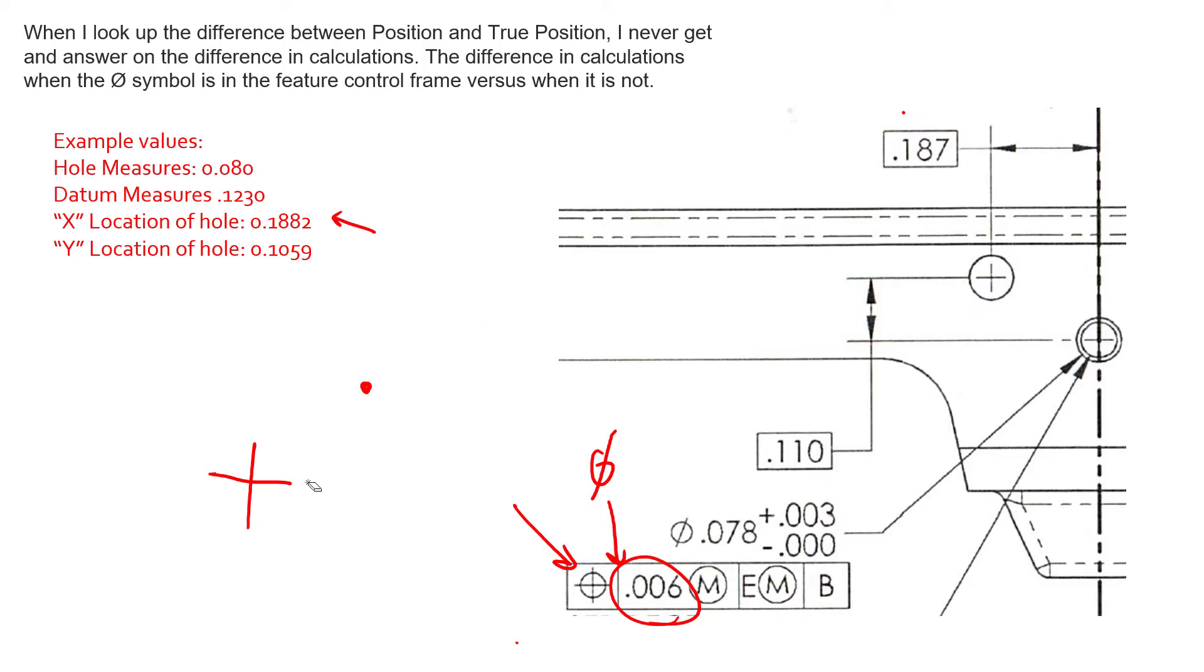giving an x deviation away from its true position of 0.0012 or the difference between 0.1882 and 0.187. So we have an x deviation of 0.0012 and we have a y deviation of 0.0041 or the difference between 0.1059 and 0.110. So we have x deviations and we have y deviations.